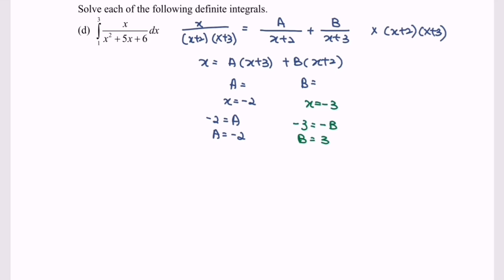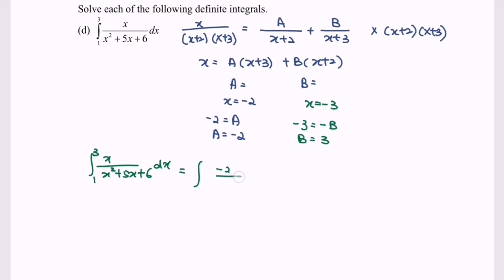Substitute the values into the partial fraction. We will have: the integral of x over (x squared plus 5x plus 6) with respect to x, from 1 to 3, which equals the integral of negative 2 over (x plus 2) plus 3 over (x plus 3), with respect to x, from 1 to 3.